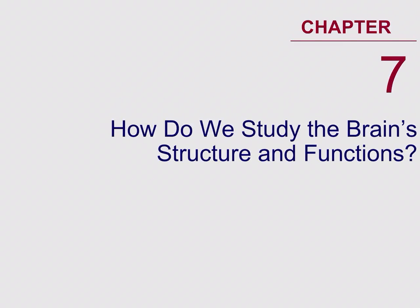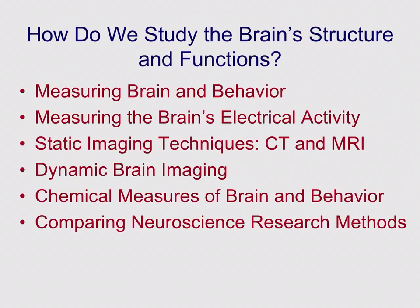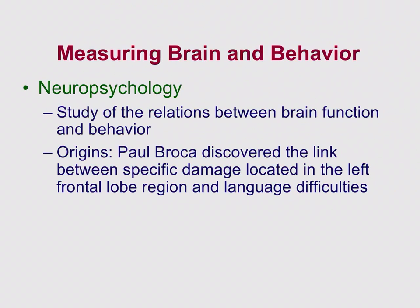In this series we are going to talk about the way that we measure brain structure and brain function. We're looking at methodology and how we study the brain — things like studying brain and behavior in general, the history behind that, studying electrical activity, static imaging like CT and MRI, as well as dynamic brain imaging like EEG and fMRI. We'll cover chemical measures and there's a comparison chart at the end looking at all the methodologies compared to each other.